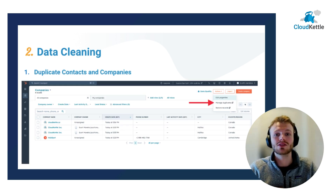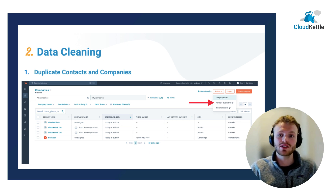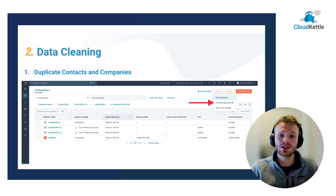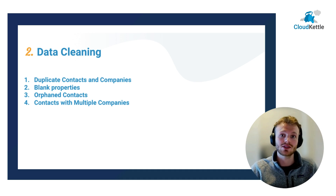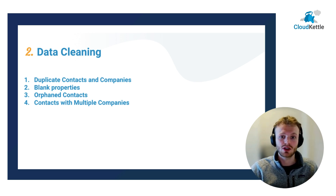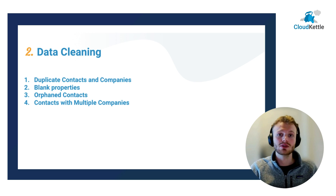The second mistake is failure to properly clean data. The most important factor is duplicate contacts and companies. HubSpot has that managed duplicates button, but that button goes away when you install the Salesforce integration in HubSpot and connect it to the Salesforce instance. You want to get started now and thoroughly clean all duplicates before you activate that integration. There are also blank properties in HubSpot records — like a contact missing the email field — orphan contacts with no related company relationship, and contacts with multiple company relationships. In most instances of Salesforce, contacts should only have one account relationship, so you either need to delete those excess relationships or speak to your implementation partner to determine a plan.